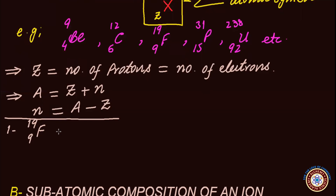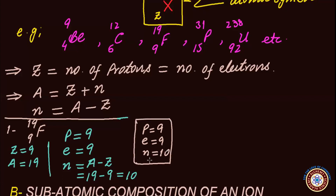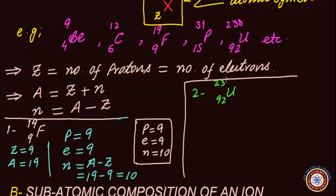First example: fluorine atom 9F19. Here Z is 9 and the nucleon number is 19. Protons in the nucleus: 9. Electrons: 9, since atoms are neutral particles. Neutrons: A minus Z equals 19 minus 9 equals 10. This set — 9 protons, 9 electrons, and 10 neutrons — is the subatomic composition of fluorine.